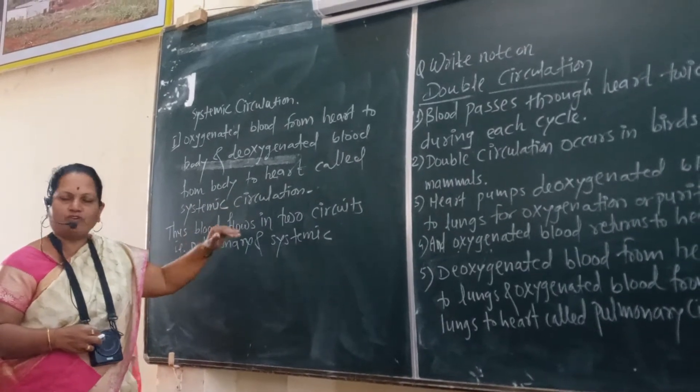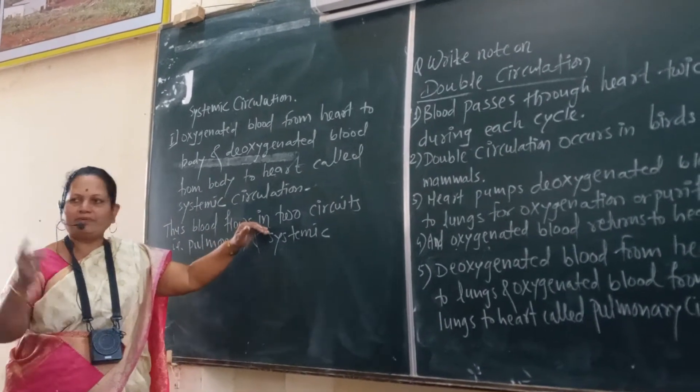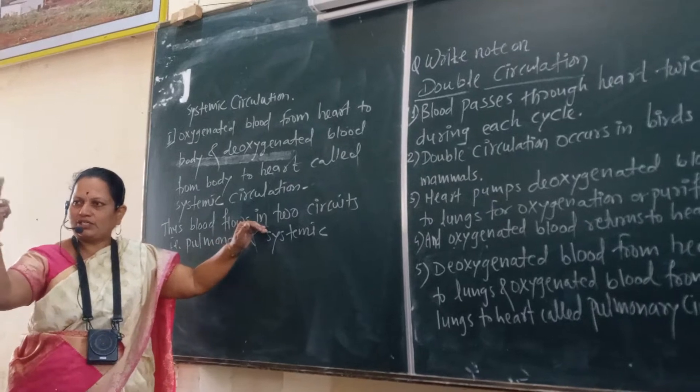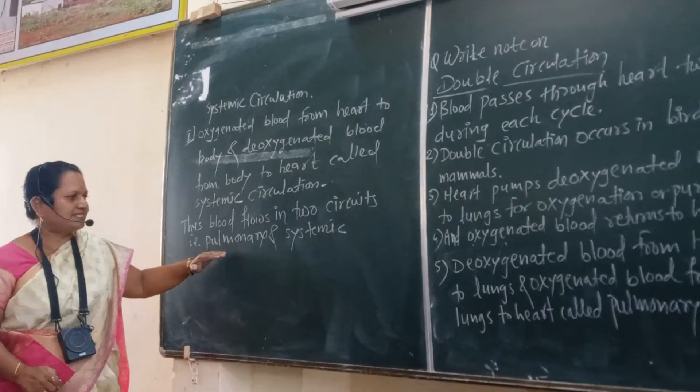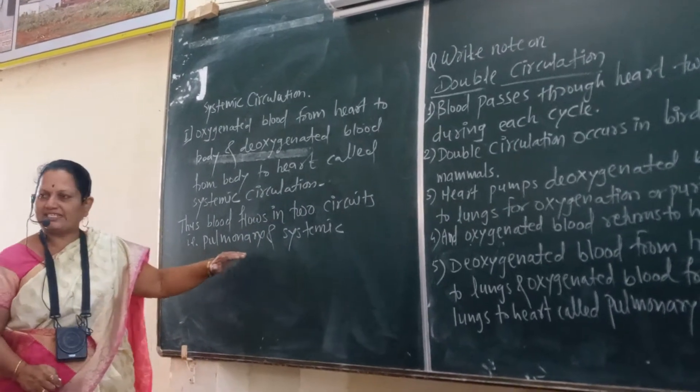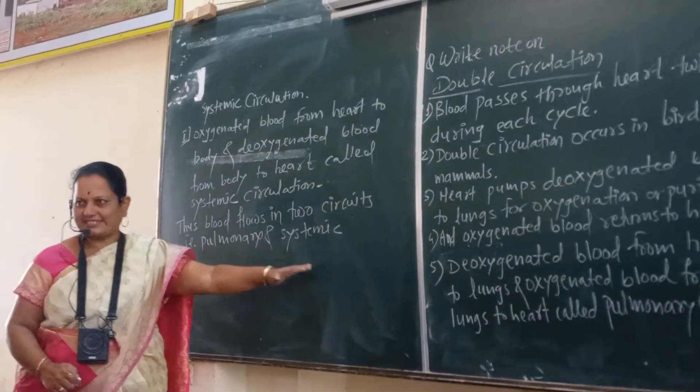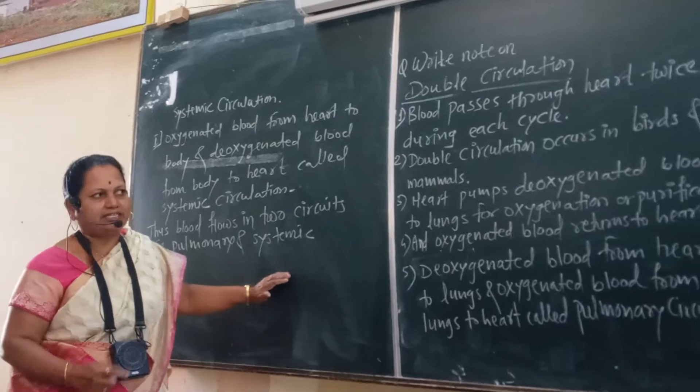So, blood flows in how many circuits? Two circuits — the pulmonary circuit and the systemic circuit. Together they are called double circulation.